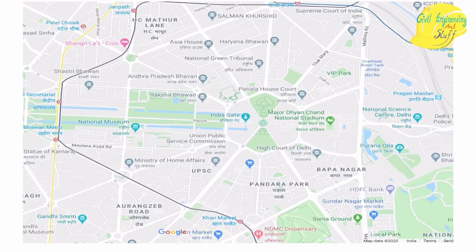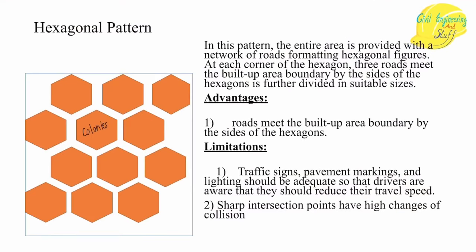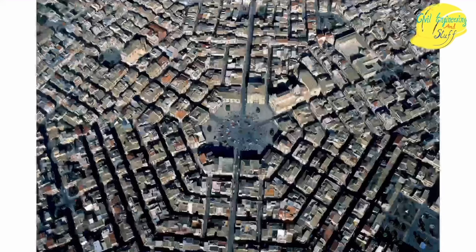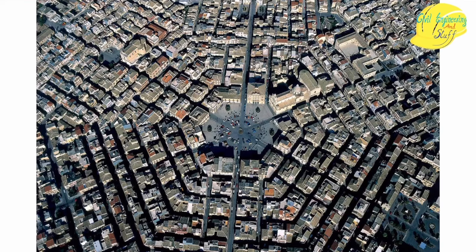After this, we have the hexagonal road pattern. Here, colonies are formed in the shape of hexagonal figures, and the corners of these colonies form the road network. The drawback is that a lot of intersection points are formed, thus requiring a proper traffic management system.